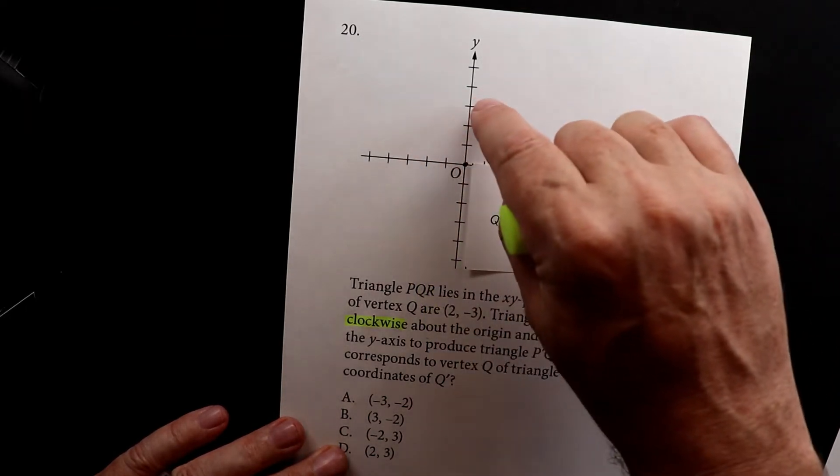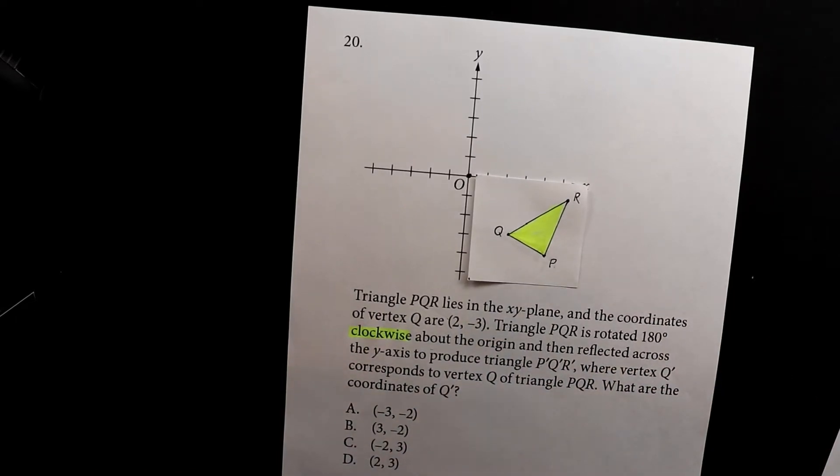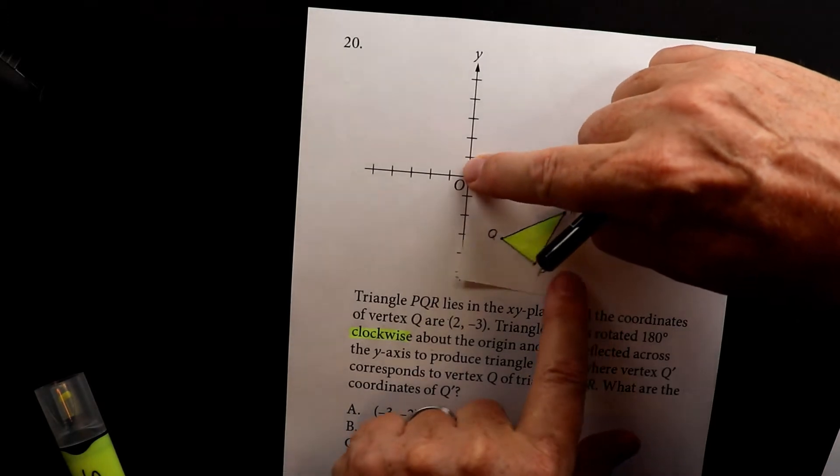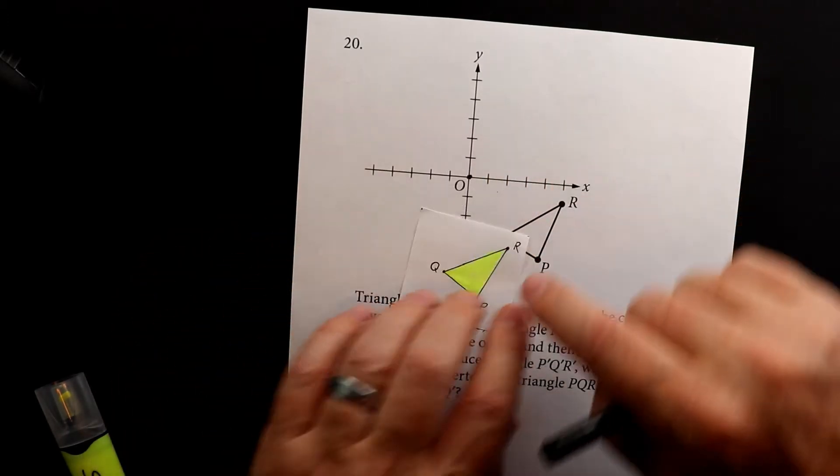The opposite is counterclockwise, which would go in the opposite direction, which I'm not going to show you because I don't want you to get confused. So what we're going to do is we're going to take from this point and we're going to rotate it 180 degrees.